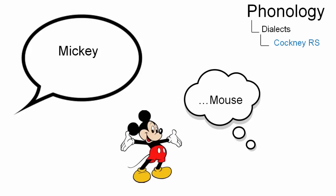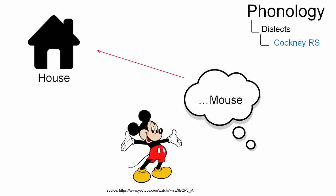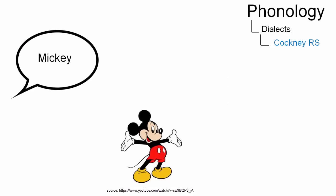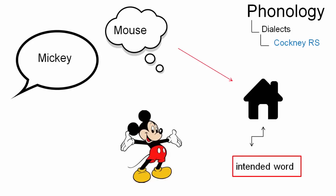Basically, rhyming slang consists of a pair of associated words where the second associated word rhymes with the word intended. In this case, Mickey is associated with Mickey Mouse and Mouse rhymes with House, which is the intended word.